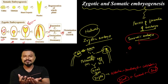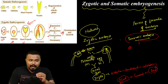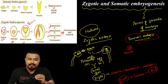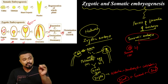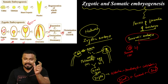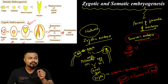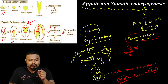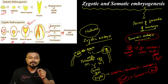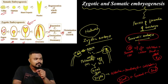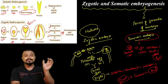Zygotic embryogenesis involves pollen, anther, flowers, ovary, egg, and fusion — this is not a tissue culture process. In contrast, somatic embryogenesis uses a somatic cell. The same type of embryo development occurs but from a somatic cell under tissue culture and laboratory conditions. The somatic cell can go through a globular stage, and then regeneration into a plantlet.